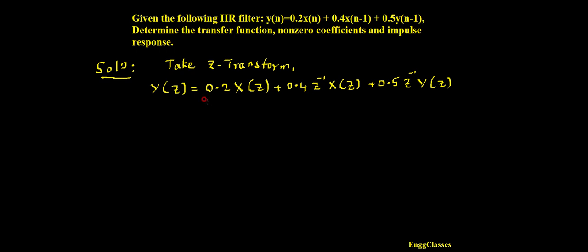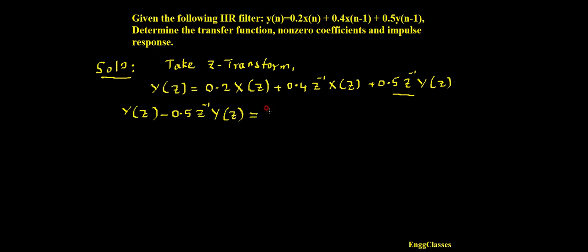In this numerical, this step itself is very important — rest is quite simple. I have to regroup the terms: Y(Z) terms on one side and X(Z) terms on the other side. Moving 0.5·Z⁻¹·Y(Z) to the LHS gives: Y(Z) − 0.5·Z⁻¹·Y(Z) = 0.2·X(Z) + 0.4·Z⁻¹·X(Z).